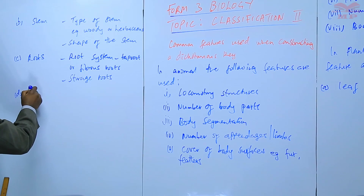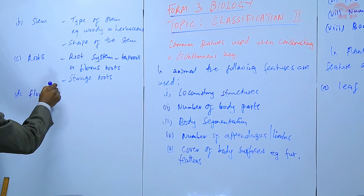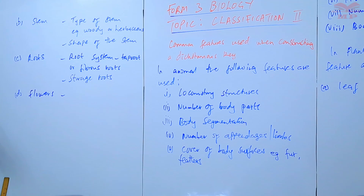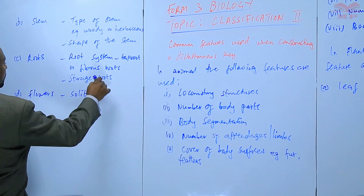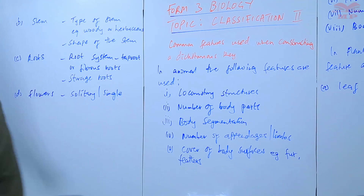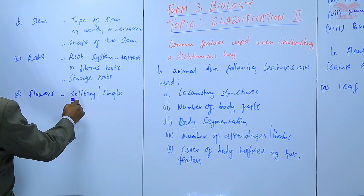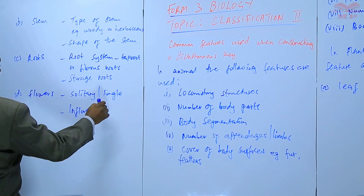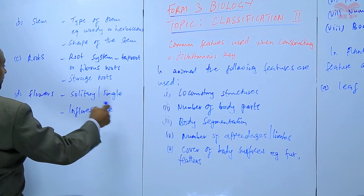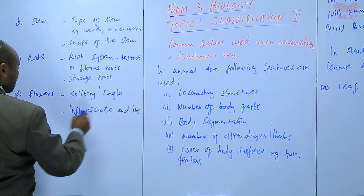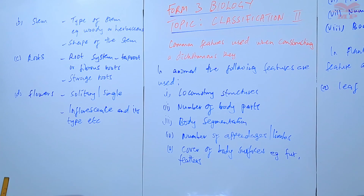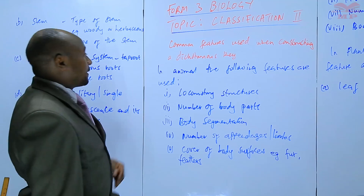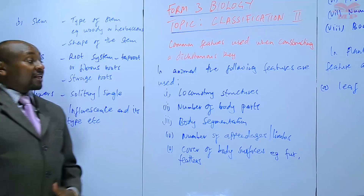We can also use the flowers. For example, whether flowers are solitary or single flowers, or inflorescence and its type. Those are features that we can use when we are constructing the dichotomous key.